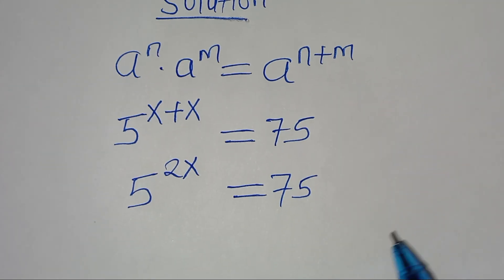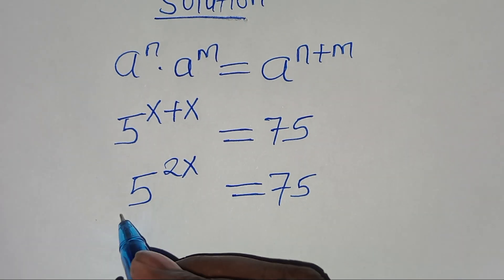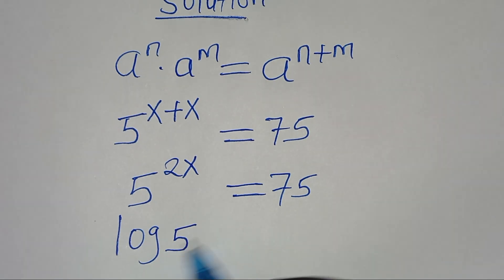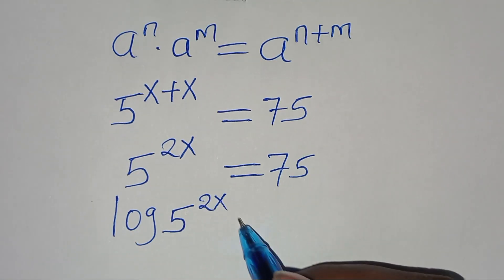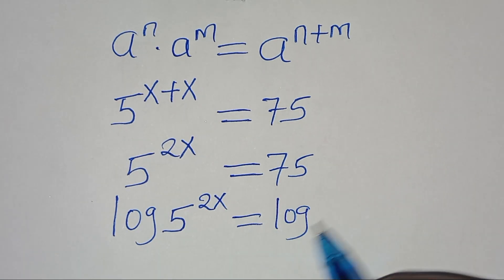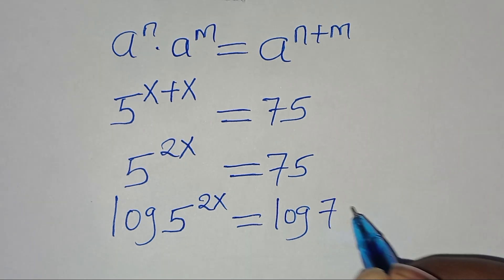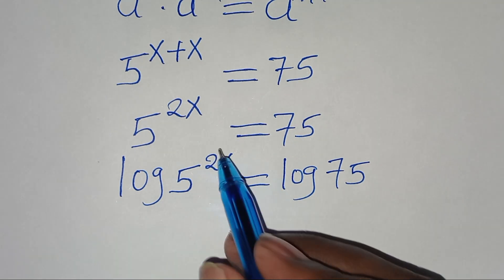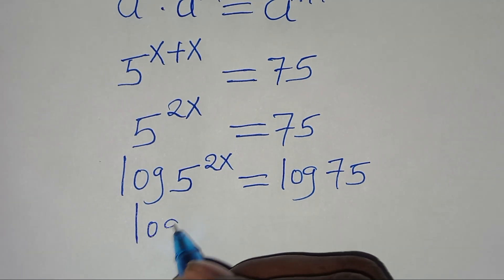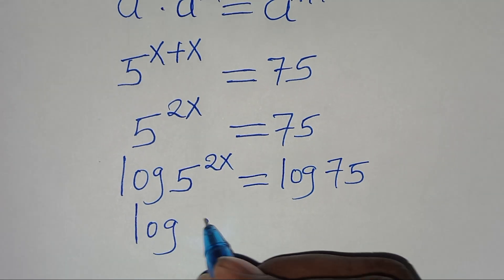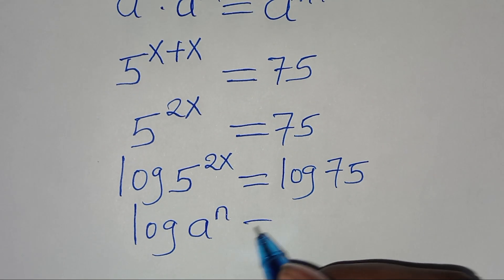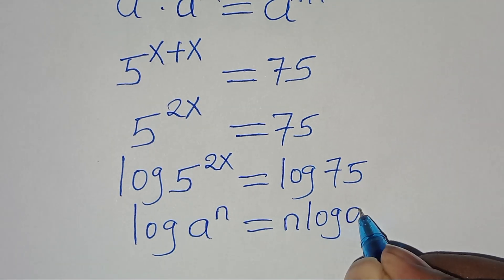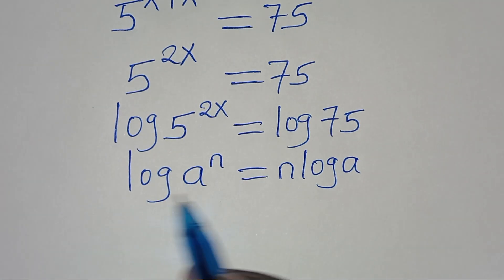To solve for x, we introduce logarithm on both sides, giving us log(5^(2x)) = log(75). Now, log(5^(2x)) is in the form of log(a^n), which we can express as n·log(a), applying the power rule of logarithms.